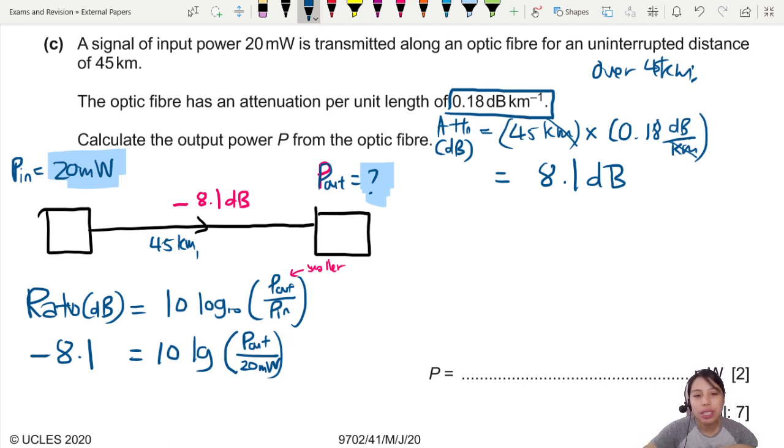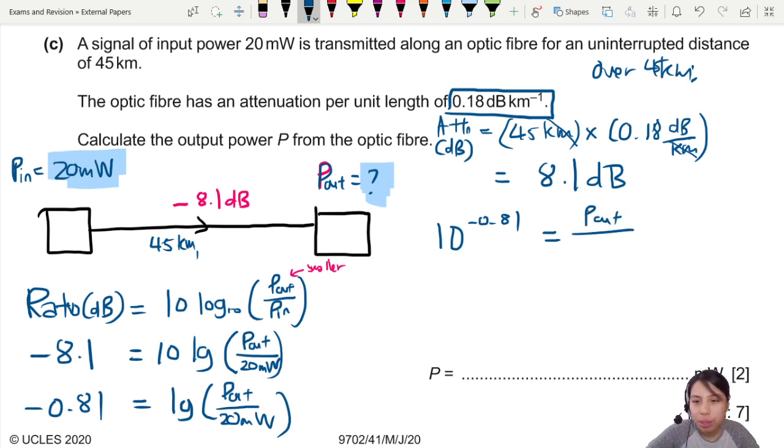Do the same thing again like just now, rearrange and get your value. So this will be -0.81 equals to log(Pout/20 mW). So pressing calculator, 10^(-0.81) equals Pout/20 mW. So your Pout will give you 3.0976 milliwatt. Final answer, I'm going to write to 2 significant figures, so 3.1 milliwatt. Everything's in 2SF, so I can stick to 2SF.